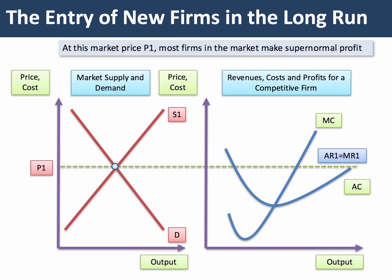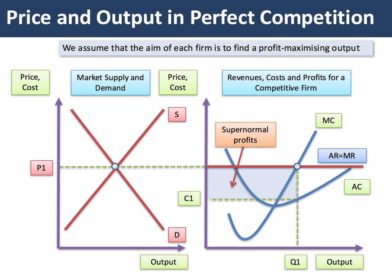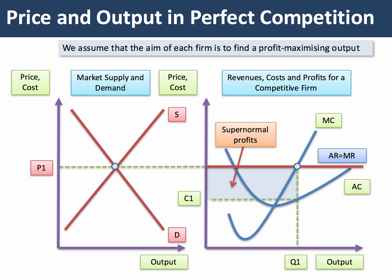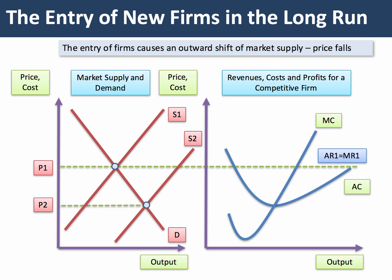Here's our initial position. We make a distinction on the left hand side between the market, and the diagram on the right is the cost and revenue for a representative firm. Initially, if you think back to our original video on short-term equilibrium, this firm at the prevailing price P1 can make super normal profit. Now if that is common to most firms in the market, we'll see the entry of new firms into the industry. The entry of new firms will bring about an outward shift of the market supply curve, shifting from S1 to S2, and that of course brings down the market price to P2.